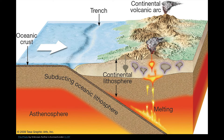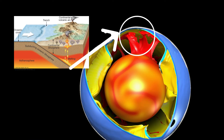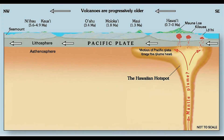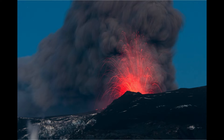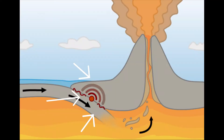Due to the heat in the mantle, the magma builds up pressure that enables it to push the ground above it. The column of rising magma is called a mantle plume. When there is volcanic activity such as an eruption, the ground moves and an earthquake is felt.